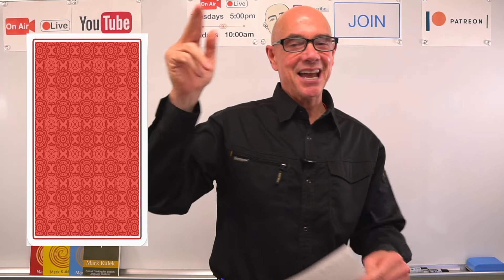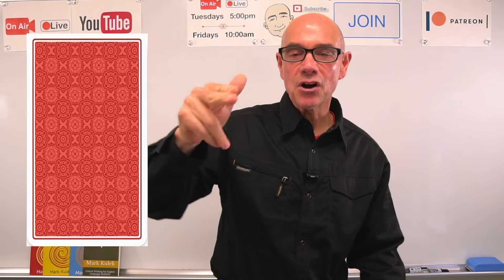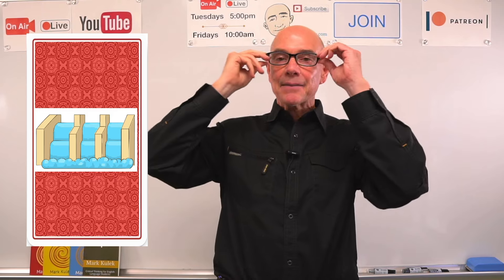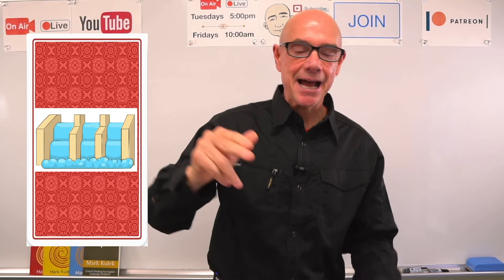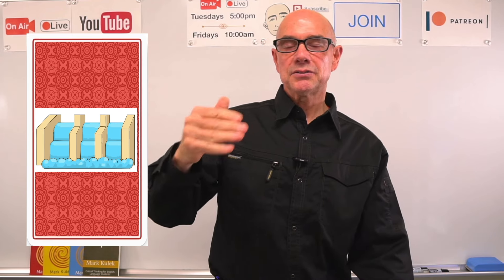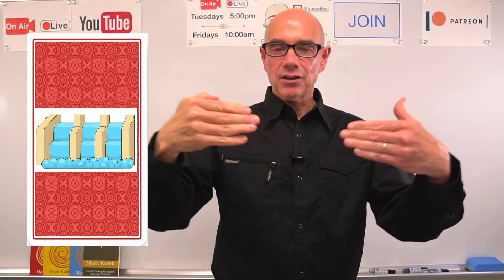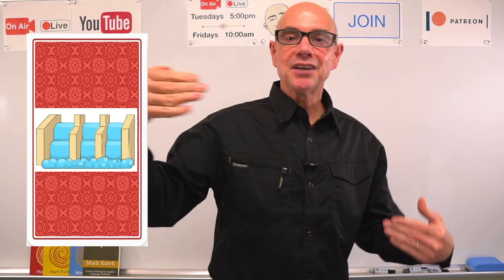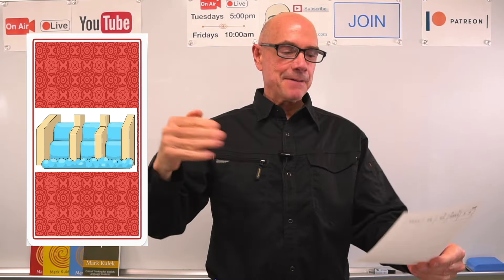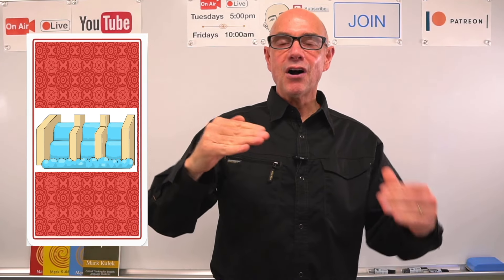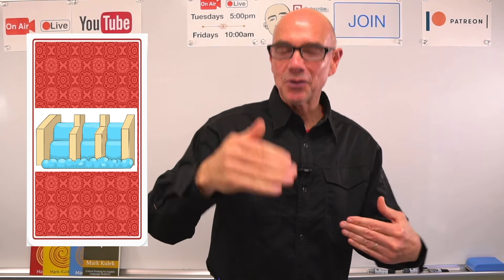Do you know what it is? Let's find out — drumroll — and it is a dam! Yes, it's a dam. It's a barrier built across a river, so for example a wall, and they build that wall across the river. It's used to control water flow.